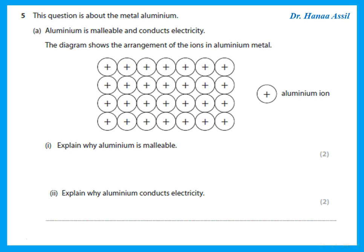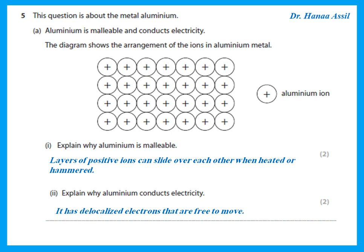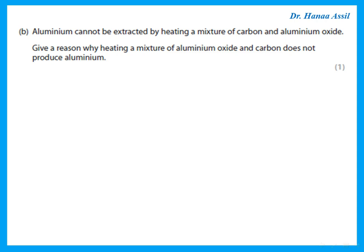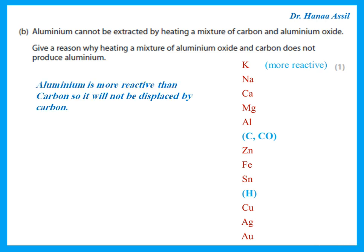This question is about metals. Aluminium is malleable because layers of positive ions can slide over each other. Aluminium conducts electricity because it has delocalized electrons that are free to move. Aluminium cannot be extracted by heating a mixture of carbon and aluminium oxide because aluminium is more reactive than carbon and cannot be displaced by it.